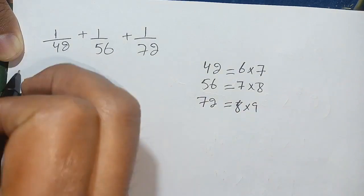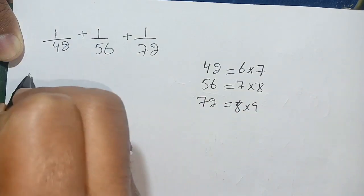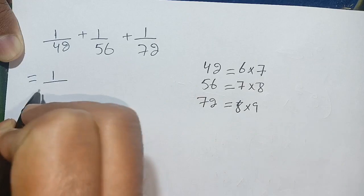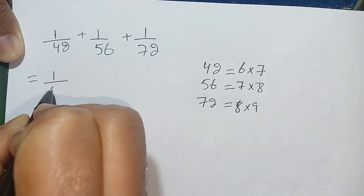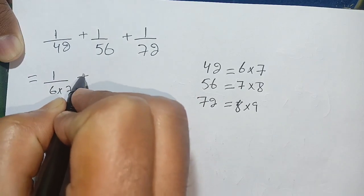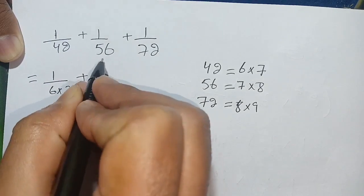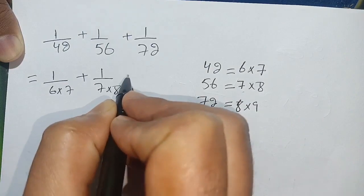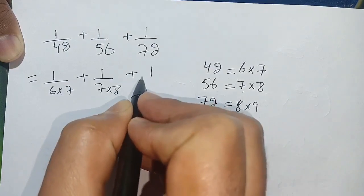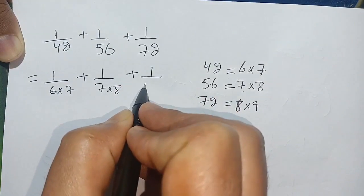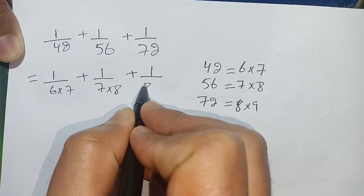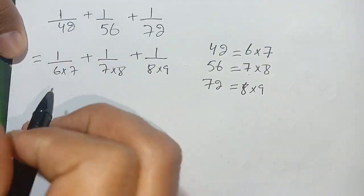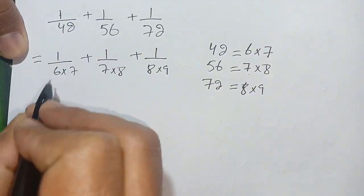Now our terms become: 1 divided by 42 as 6 times 7, plus 1 divided by 56 as 7 times 8, plus 1 divided by 72 as 8 times 9. Now in the next step: